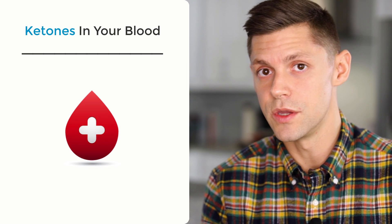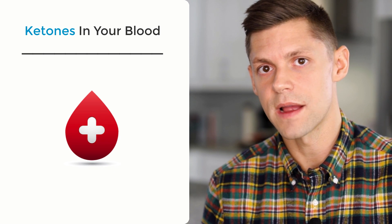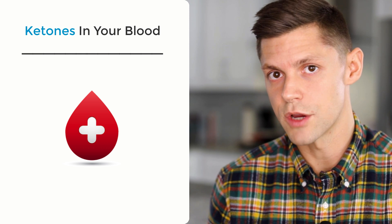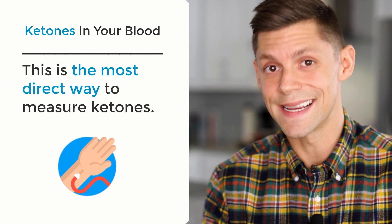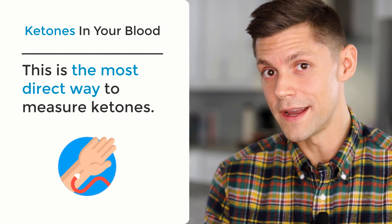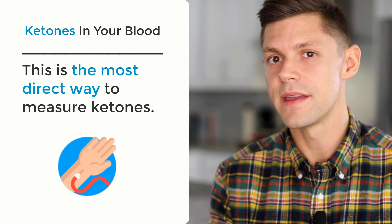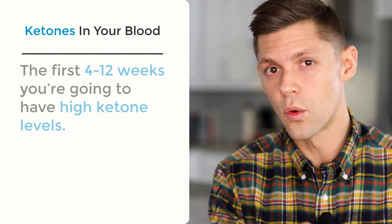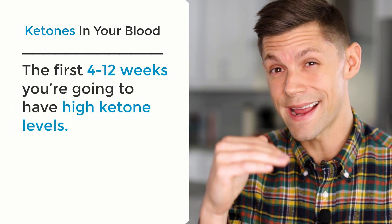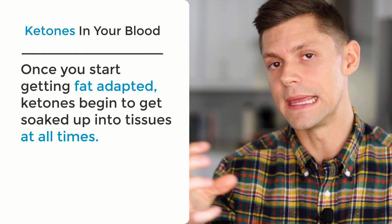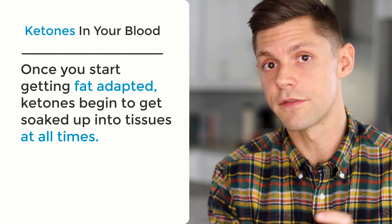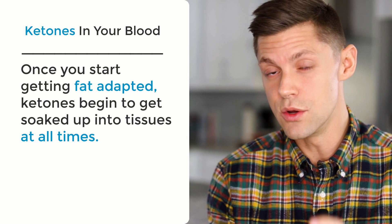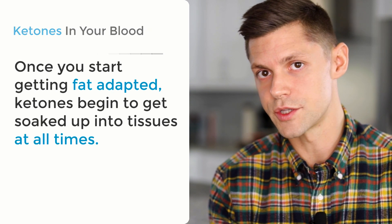Number three is blood, and this is the most common one people use when they say their ketone levels are at X, Y, or Z. If I say my ketone levels are at 1.5, that would be millimolar concentration in your bloodstream. This is the most direct way to measure ketones — you're measuring exactly what's floating around in your blood. Anything over about 0.5 is technically considered in ketosis. However, another caveat: once you start going into ketosis over the first 4, 6, 8, 10, or 12 weeks, you'll have pretty high ketone levels, but once you become fat-adapted, the ketones get soaked up into your tissues instead of floating around your bloodstream. Your body gets way more efficient at using ketones as an energy molecule, so less is just floating in your bloodstream.